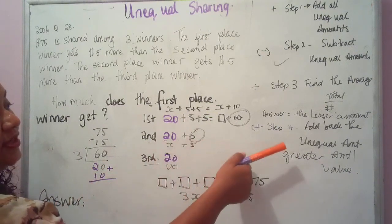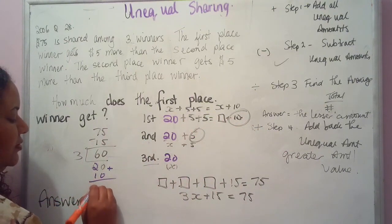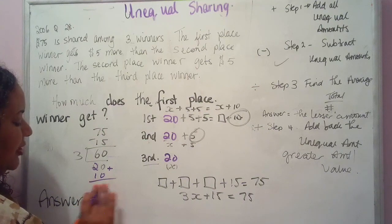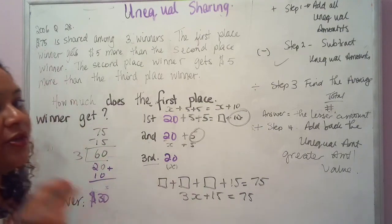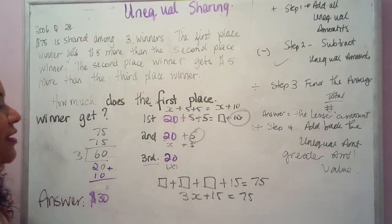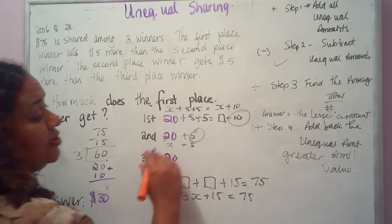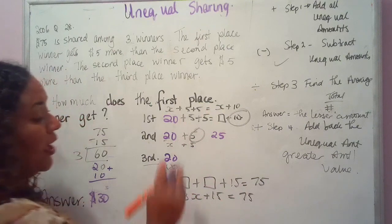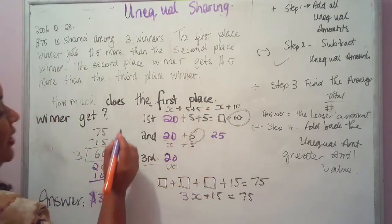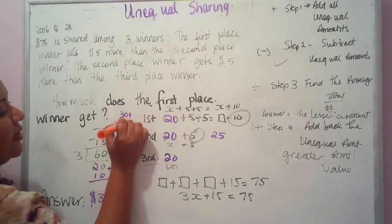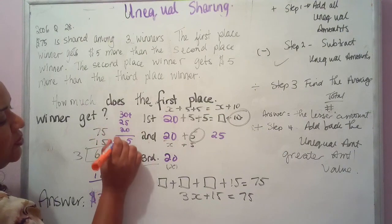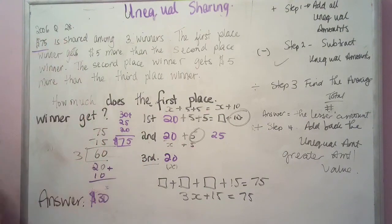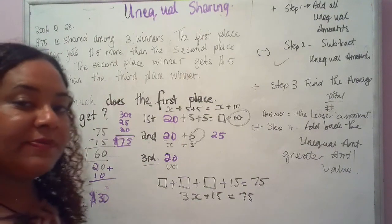Step four: add back the unequal amount — 20 + 10 = $30 for first place. Always check your answer: second place got $25, so we add 30 + 25 + 20. That gives us 75, matching our original amount. This wraps up our crash course concepts in unequal sharing, and I hope this helps clear up any misconceptions you had about this topic.